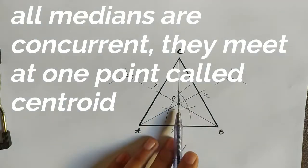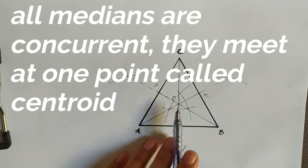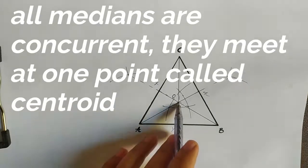Concurrent, because the lines meet at one point we call them concurrent, and the point where these meet we call centroid.